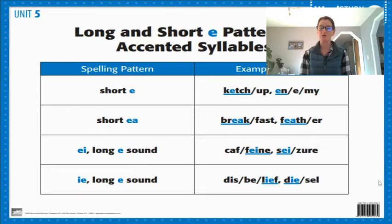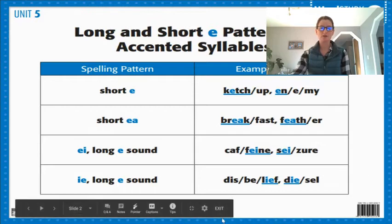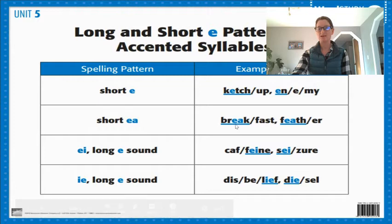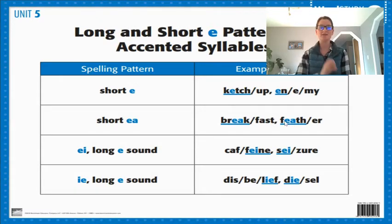It could also be an E and an A together — the short EA sound. Like in the word breakfast, it has that 'eh' sound, or feather also has that 'eh' sound. The short E sound always makes that 'eh'.